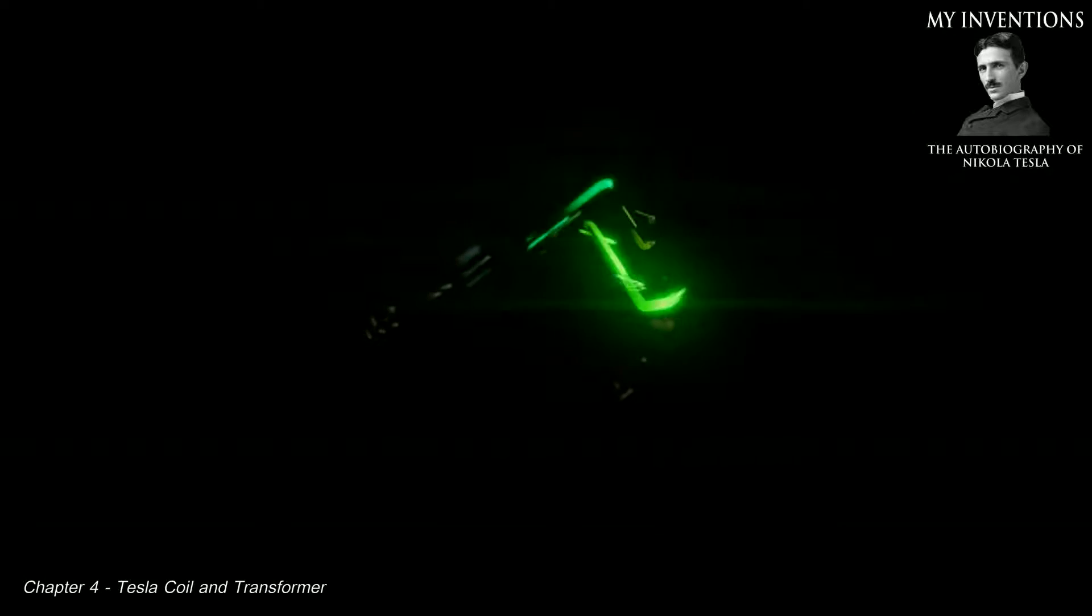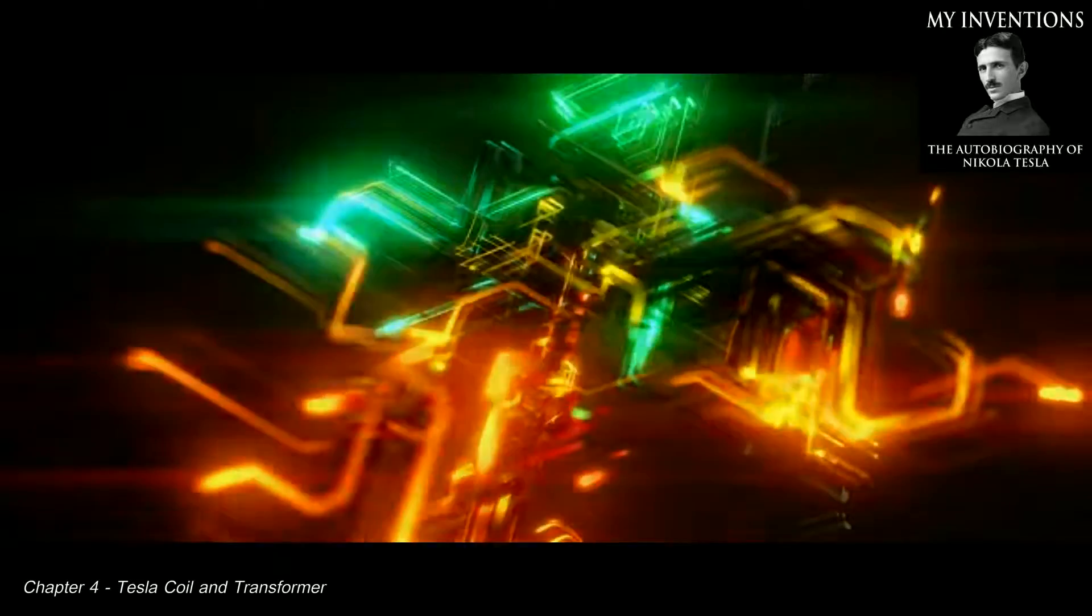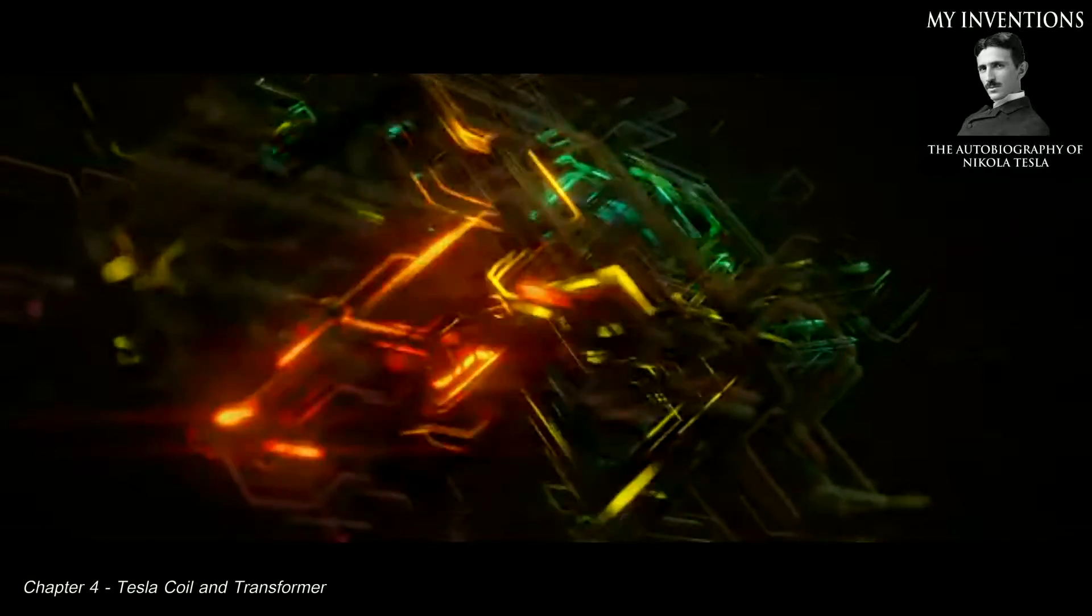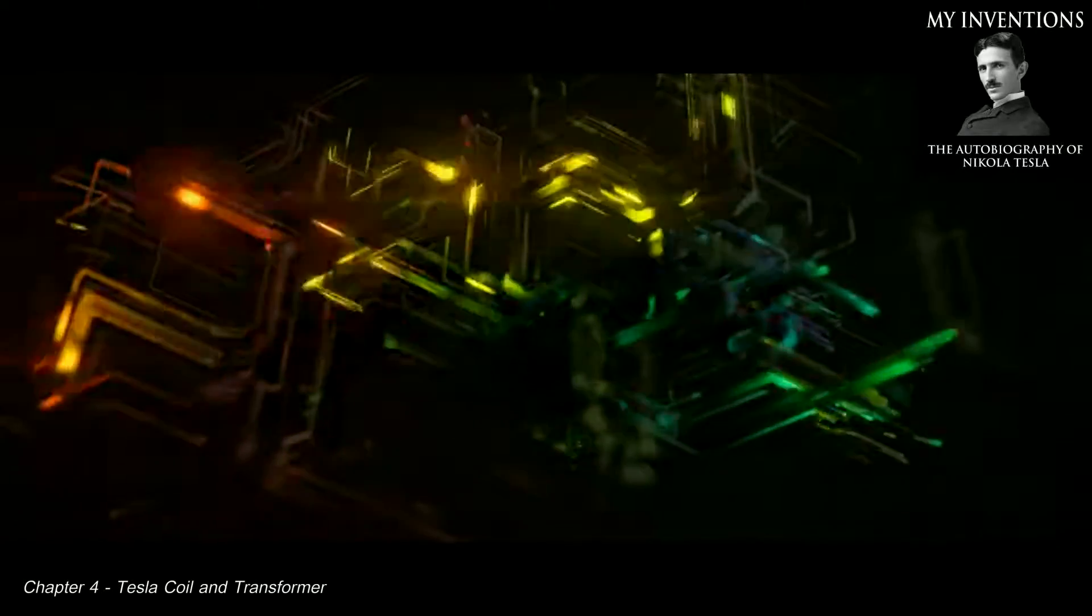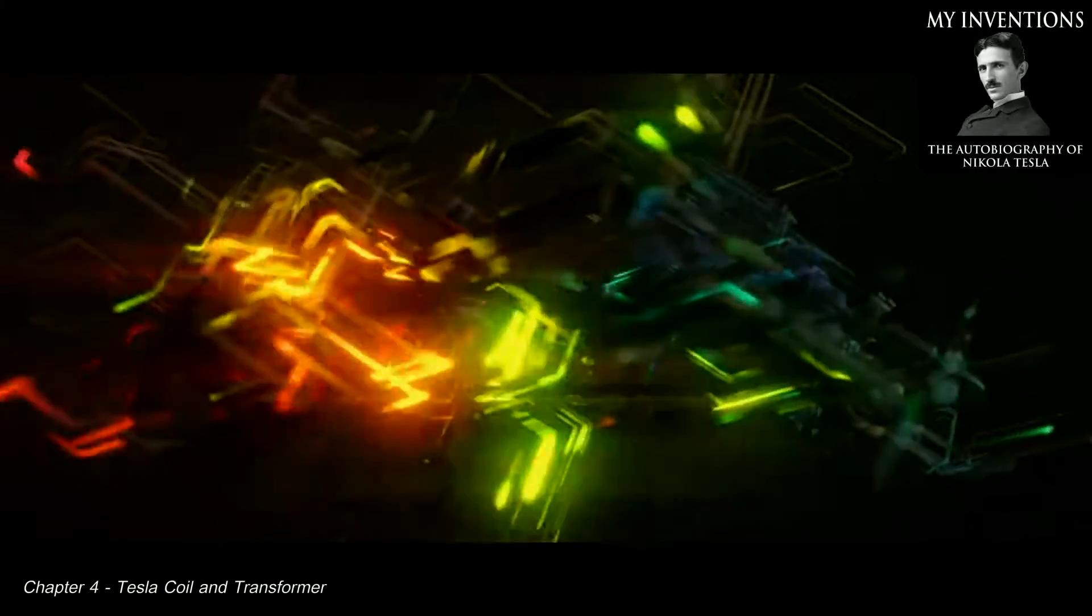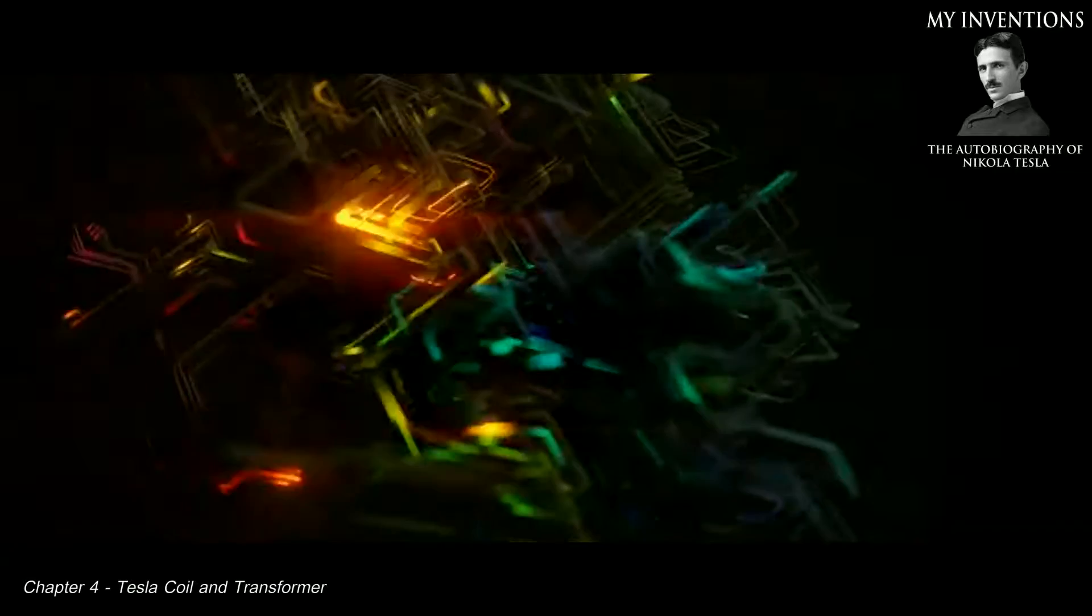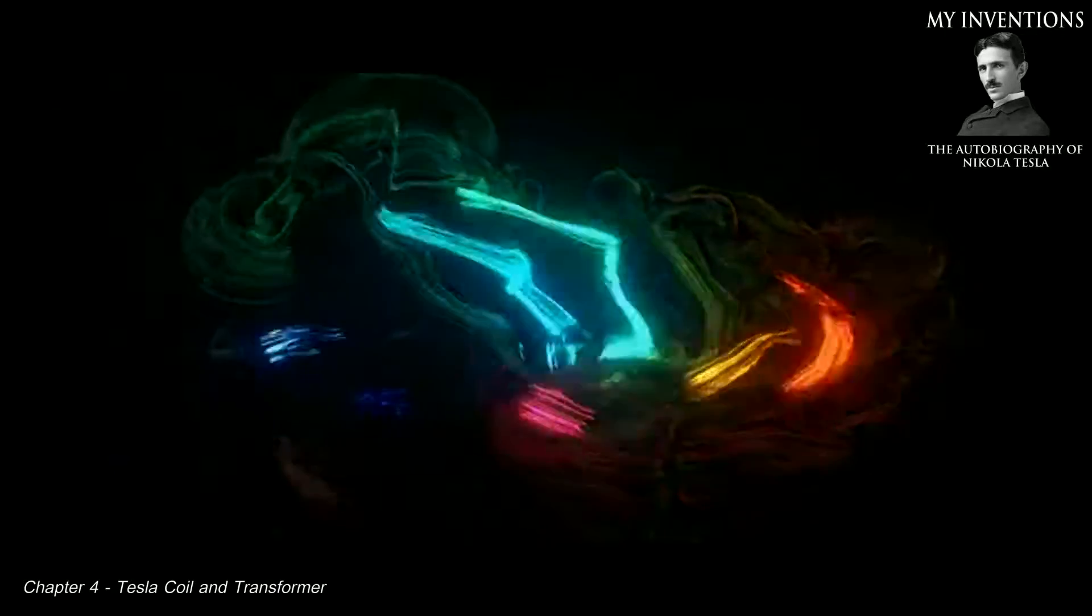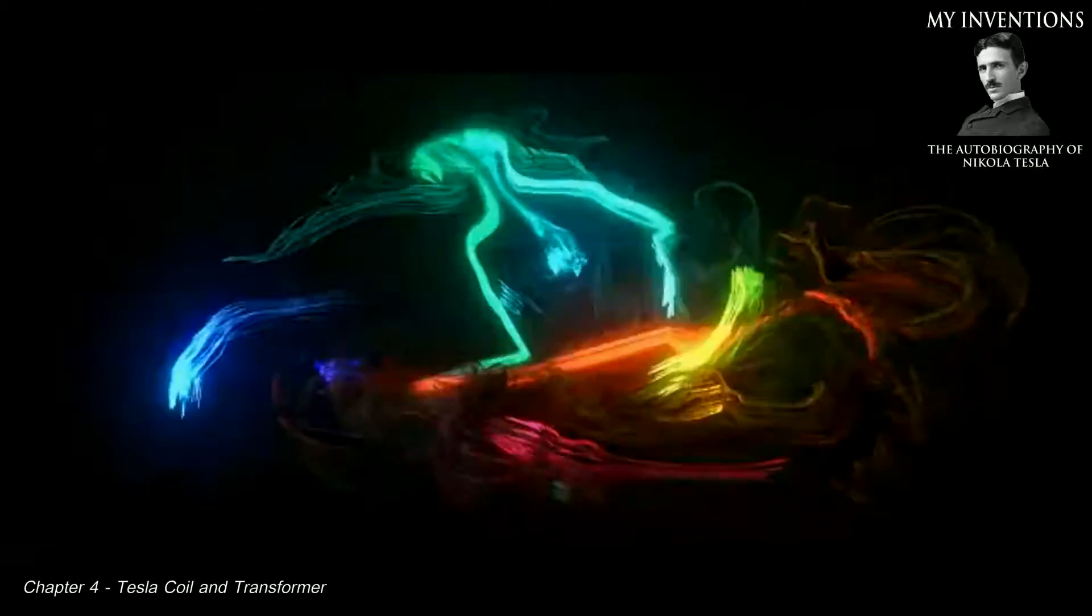Immediately thereafter, some people approached me with the proposal of forming an arc light company under my name, to which I agreed. Here finally was an opportunity to develop the motor, but when I broached the subject to my new associates, they said, 'No, we want the arc lamp. We don't care for this alternating current of yours.' In 1886 my system of arc lighting was perfected and adopted for factory and municipal lighting, and I was free but with no other possession than a beautifully engraved certificate of stock of hypothetical value. Then followed a period of struggle in the new medium for which I was not fitted, but the reward came in the end. In April 1887 the Tesla Electric Company was organized, providing a laboratory and facilities.